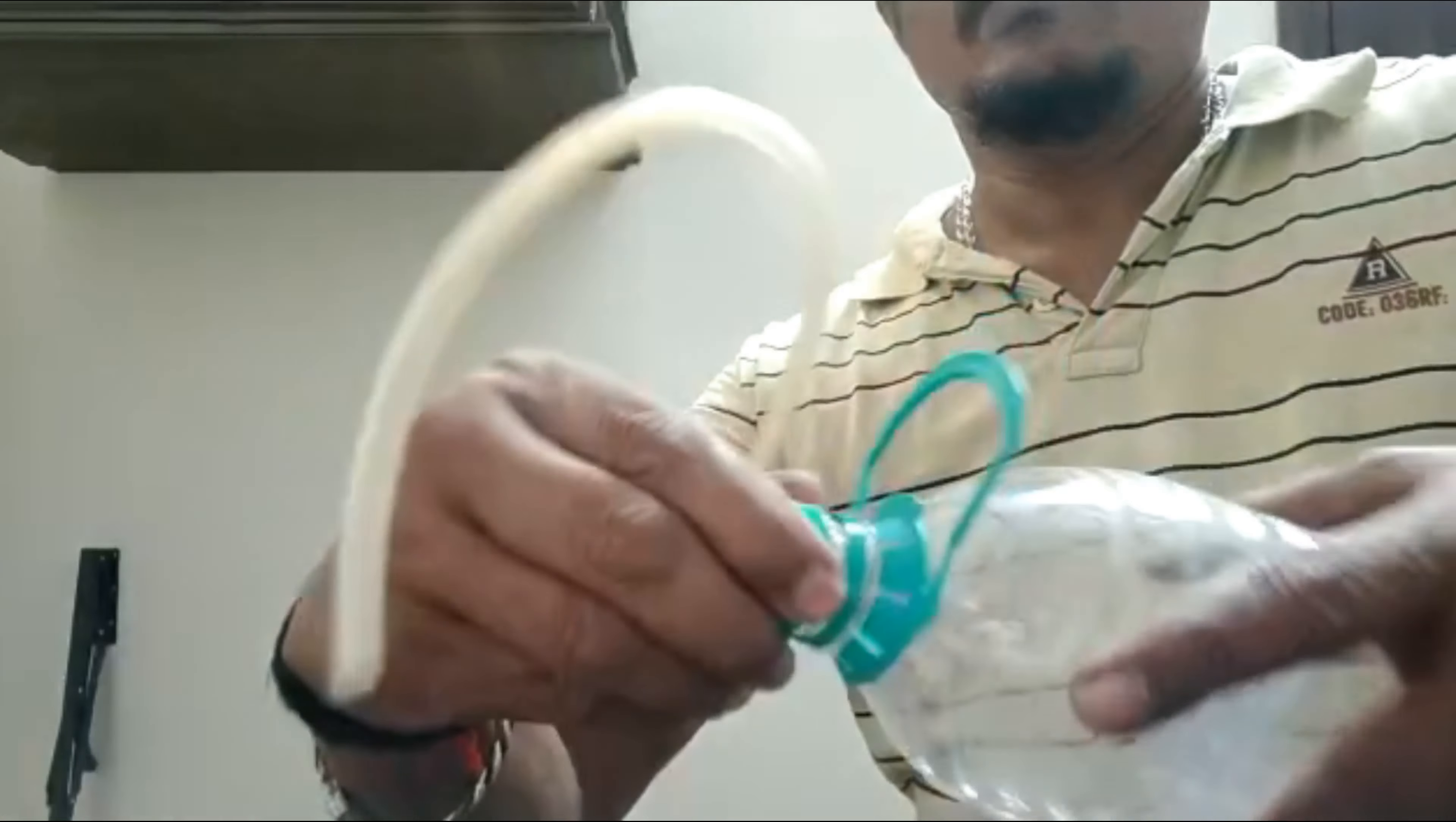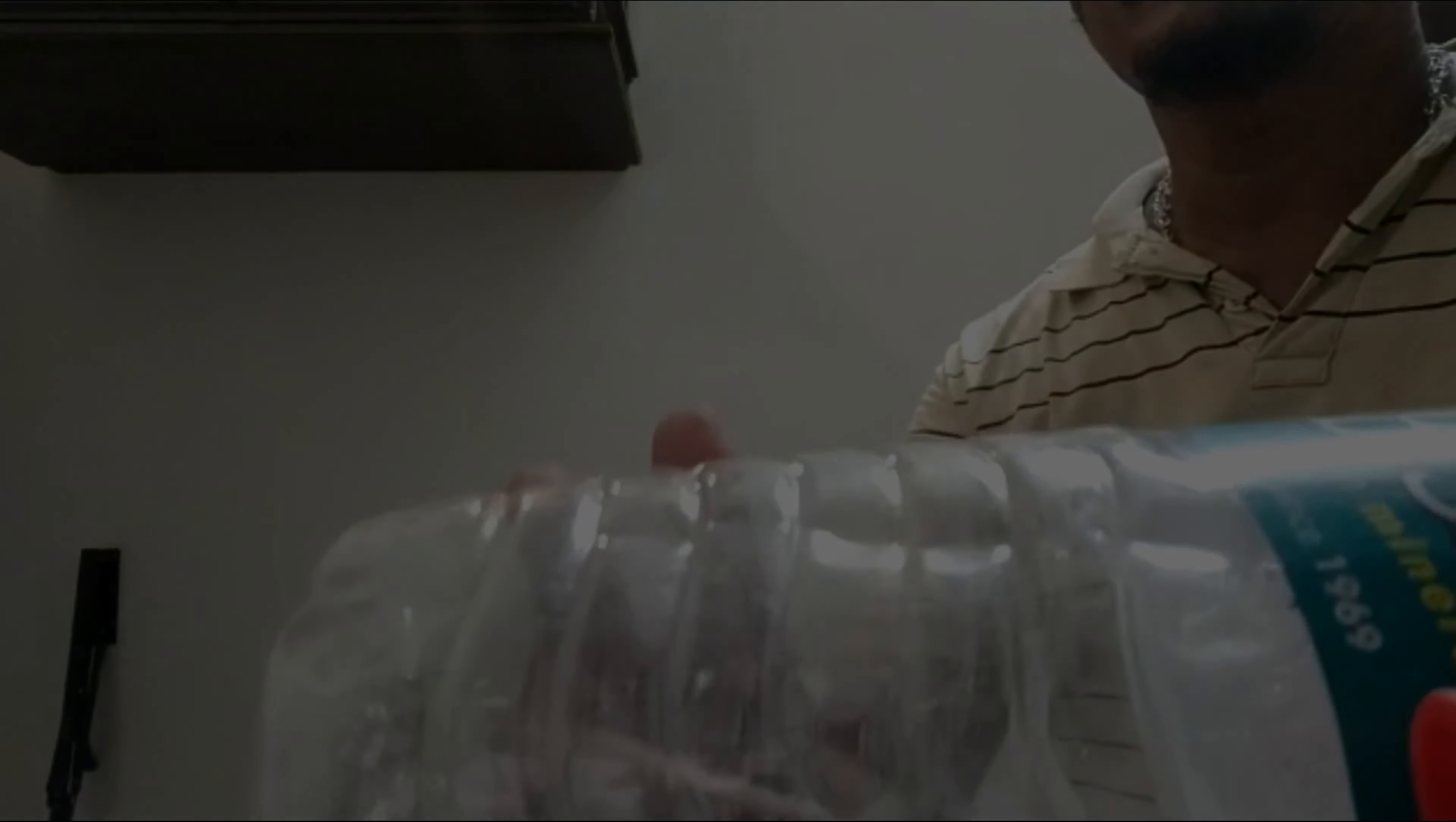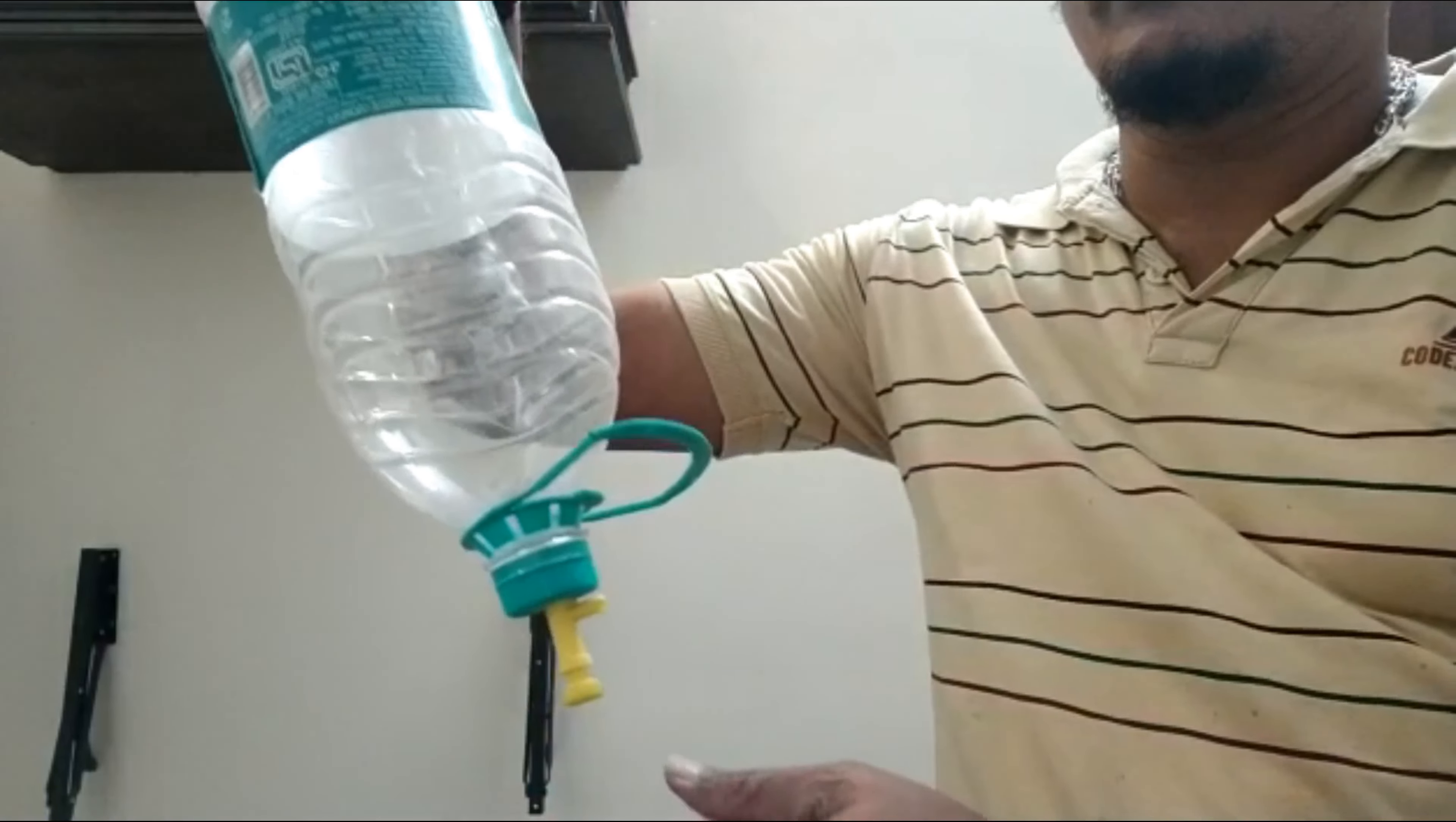Connect it to the bottle. We will cut the bottom portion here. You only need to pour water from here, and the water will start dripping from the bottom.